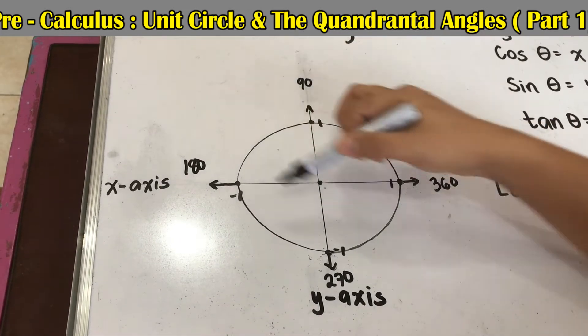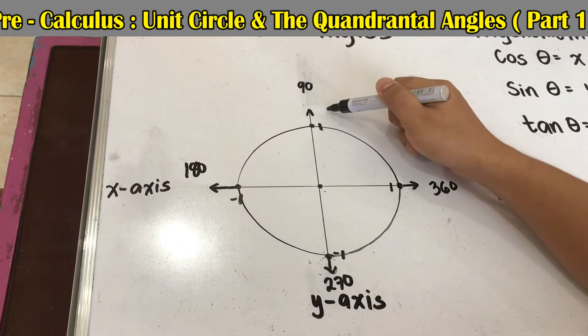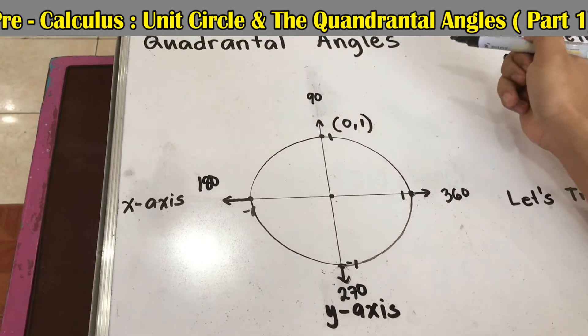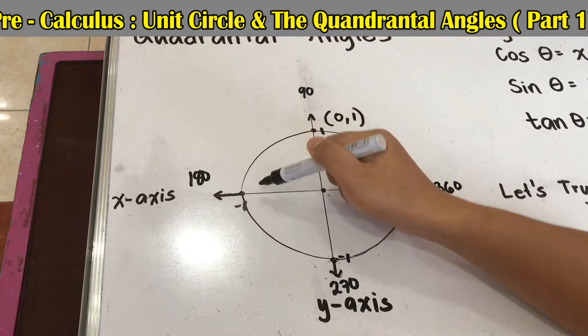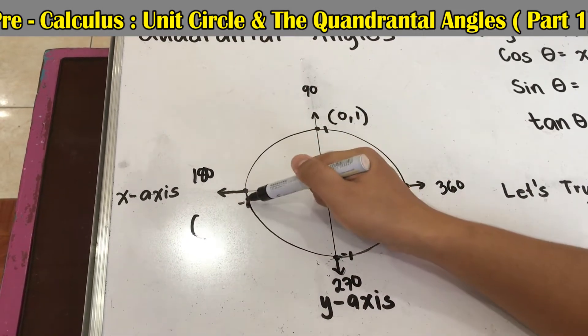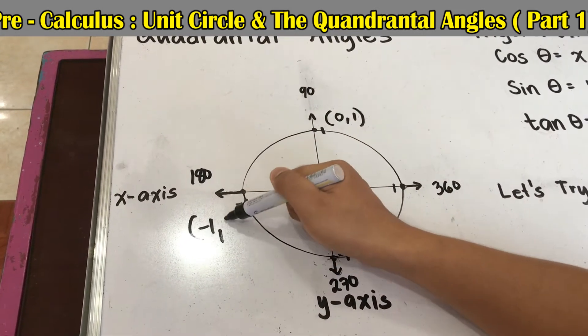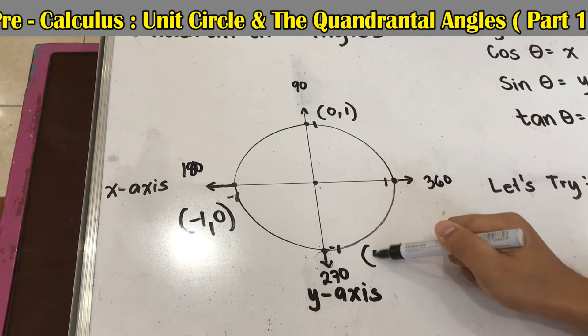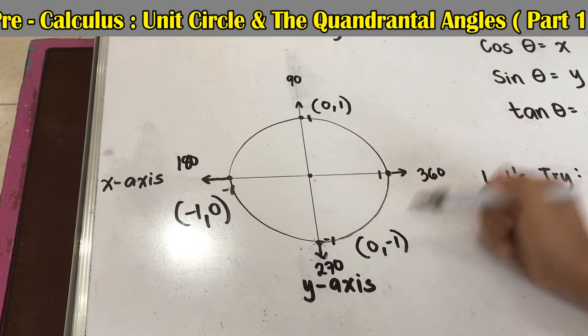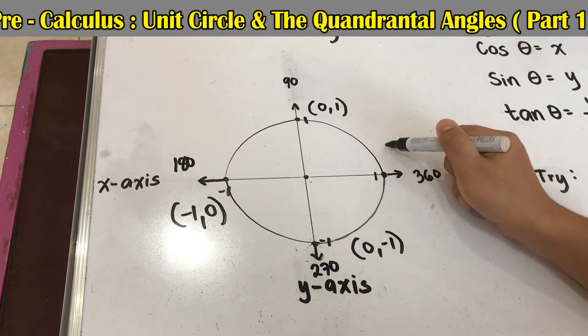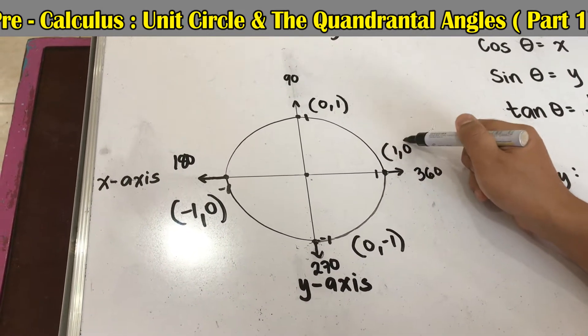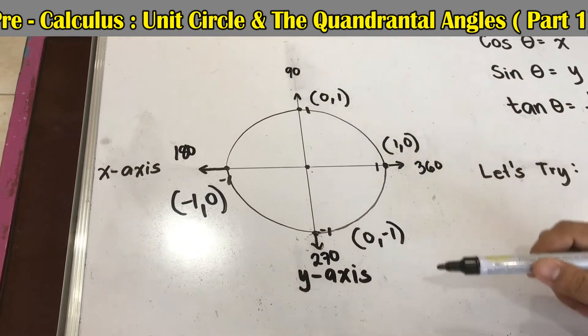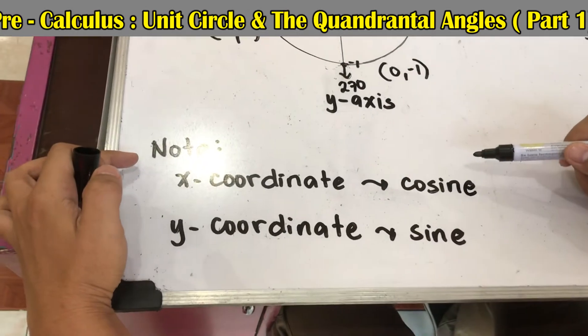First, let us find the coordinates in our quadrantal angles. Here we have the coordinate (0, 1). Here we have (-1, 0). Here we have (0, -1). And last we have (1, 0). So these are our coordinates.